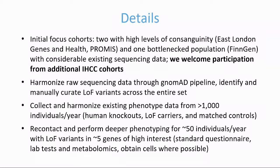The second step is to harmonise raw sequencing data through the GNOMAD data aggregation pipeline and manually curate loss-of-function variants across the entire set. For genes of particular interest — initially focusing on known existing drug targets and other high-value genes — we would collect and harmonise existing phenotype data from over 1,000 individuals per year, including human knockouts, loss-of-function carriers, and matched controls. We would also recontact and perform deeper targeted phenotyping for roughly 50 individuals per year across about five genes of high interest, including standardised questionnaires, lab tests, metabolomics, and cell collection for experimental validation.